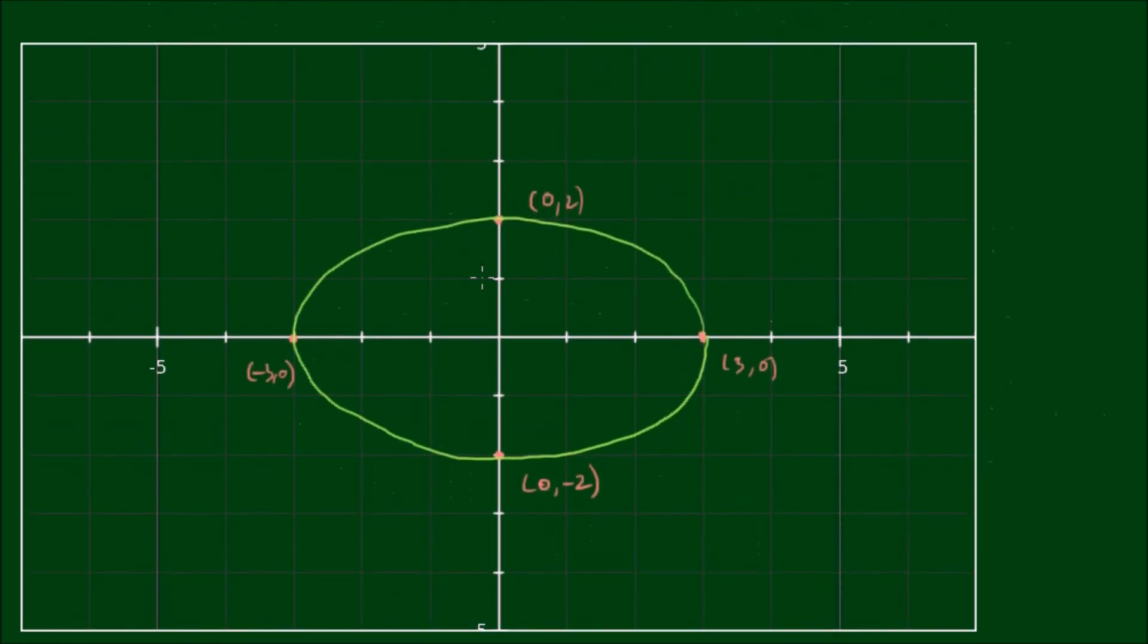Alright, so if we plot these, we have a focus at 2.24, which is approximately here. So let's say this is the point F, which has the coordinates (√5, 0). And this is the focus F', which has the coordinates (-√5, 0). We have a directrix at x equals 4.0.